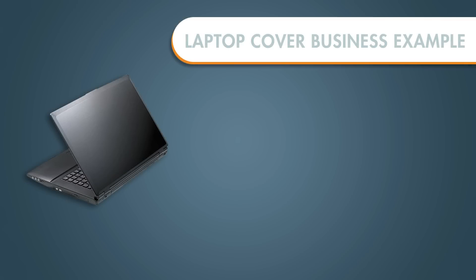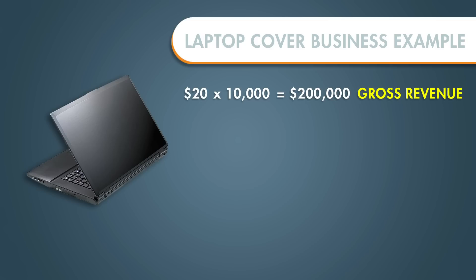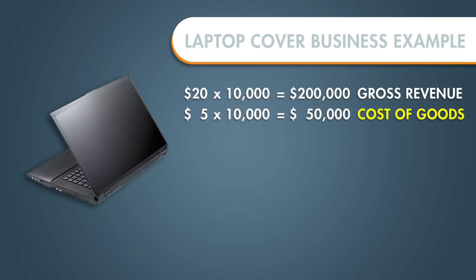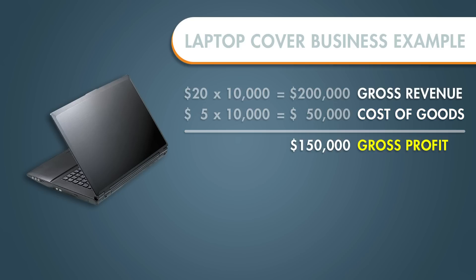Let's walk through it one more time. We sell laptop covers for $20, and we had 10,000 sales, meaning we sold $200,000. That $200,000 came into the business and ended up in our bank account. But of the 10,000 products we sold, we owed $5 on each of them, so we had to pay out $50,000 in cost of goods. We now have $150,000 of gross profit.